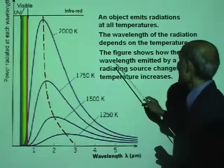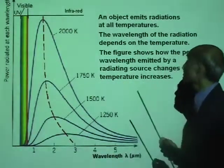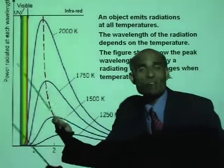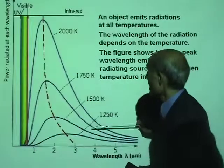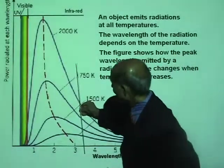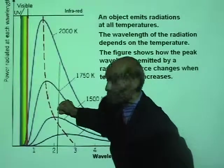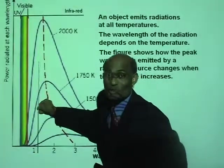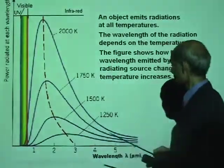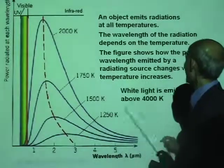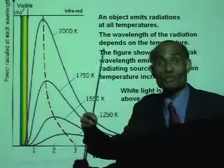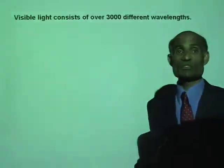The figure shows how the peak wavelength emitted by a radiating source changes when the temperature increases. As the temperature increases, the wavelength emitted becomes shorter and shorter. White light is emitted above 4,000 degrees Celsius.